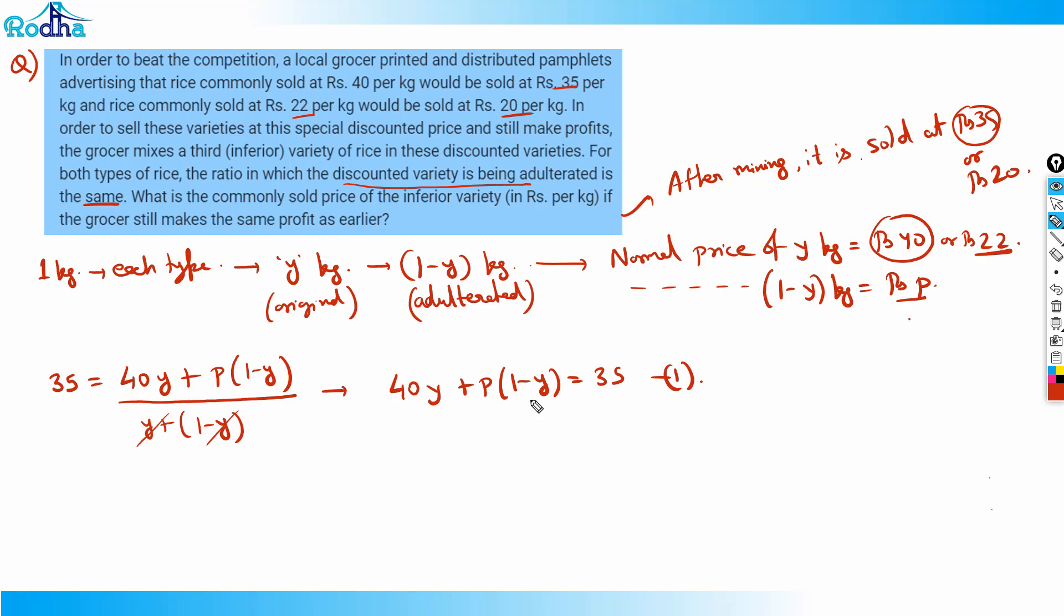Let's move to equation 2. Similarly, my second equation would be if the price is 20. In that case, 20 will be equal to 22y at Rs. 22 plus (1-y) kg at p, divided by y plus (1-y) which equals 1. If I solve this part, I'll be getting 22y plus p(1-y) equals 20. That's my equation number two.